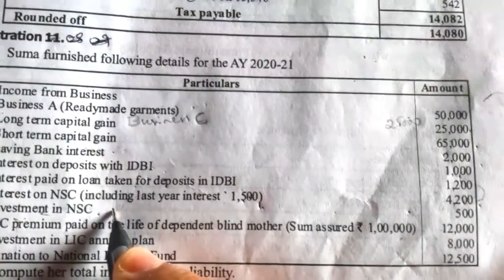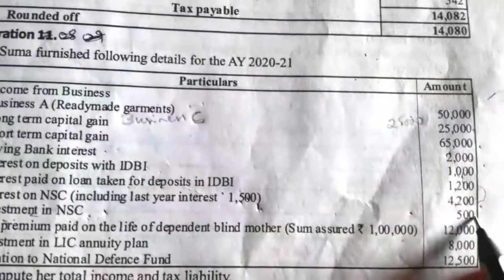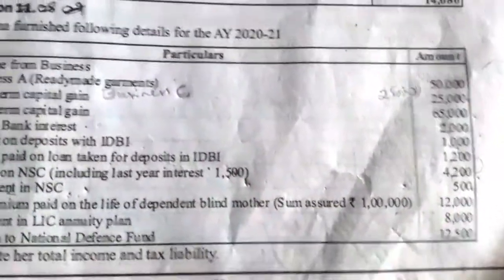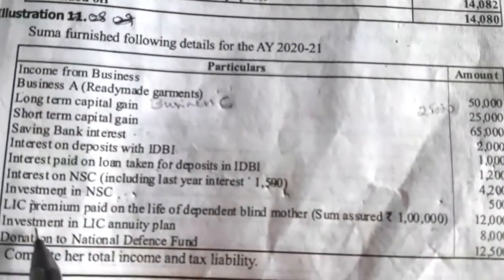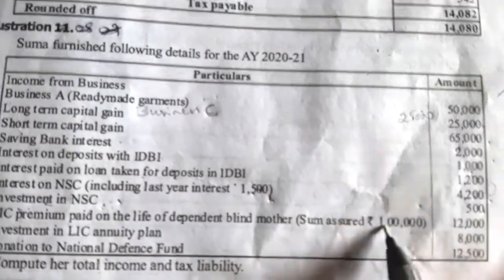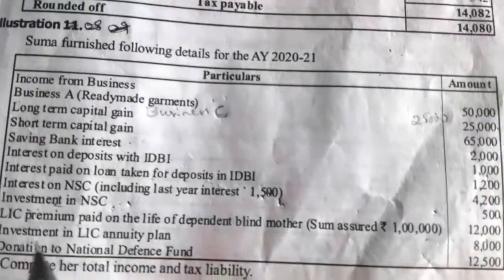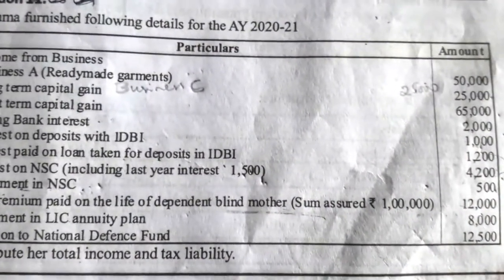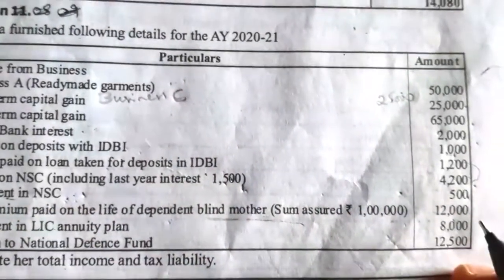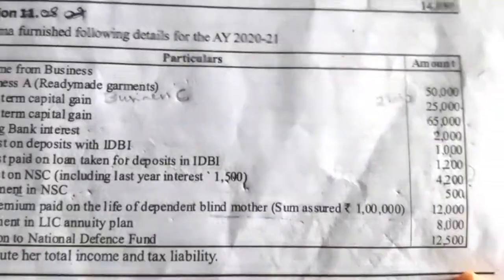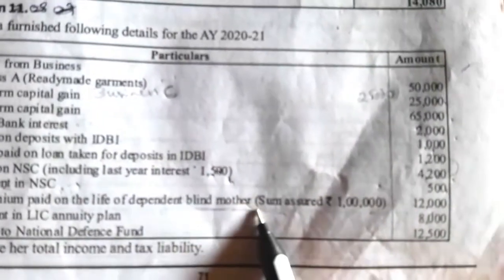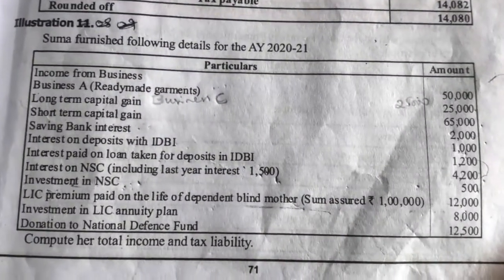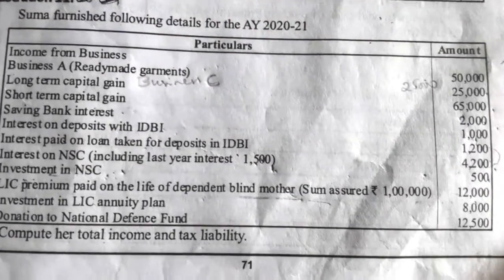Next, investment in NSC — for this investment she can claim deduction under Section 80C; that is rupees 500. This is not income from other sources; she invested in NSC so it can be claimed as deduction under Section 80C. Next, LIC premium paid on the life of dependent blind mother — sum assured rupees 1,12,000, premium amount is 12,000. For blind parents, deduction under Section 80C for LIC premium cannot be claimed. LIC premium can be claimed for self, spouse, and children — not for parents, sisters, or brothers. So for this 12,000 premium she is not eligible to claim a deduction under Section 80C.